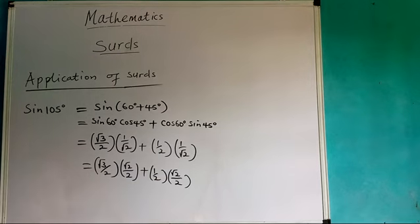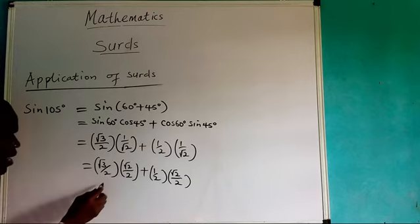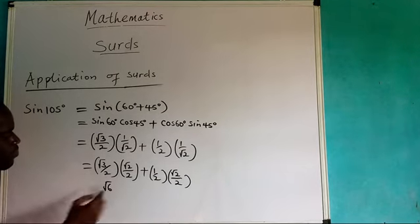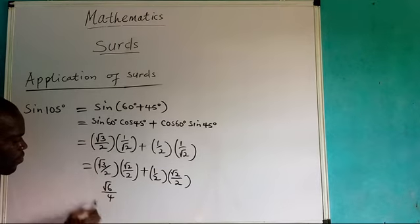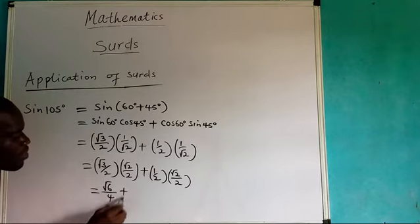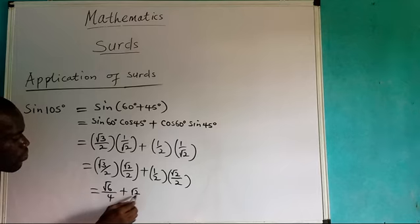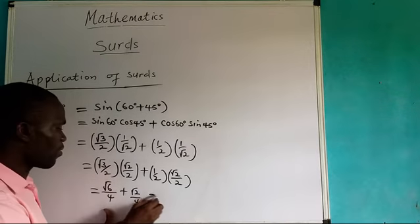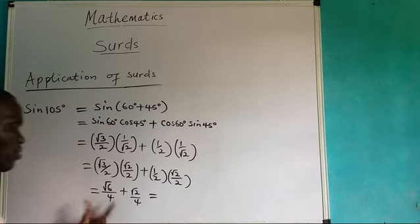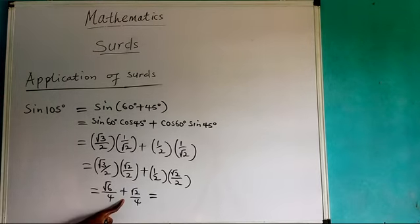Now I can go now. You simply, for this one I have root 6. I have root 3 times root 2 over 4. This one is 4. For this one I have root 2 over 4. Now what can I do? It means that we need to take the LCM of the denominator. Since we have two fractions and there is an addition sign.